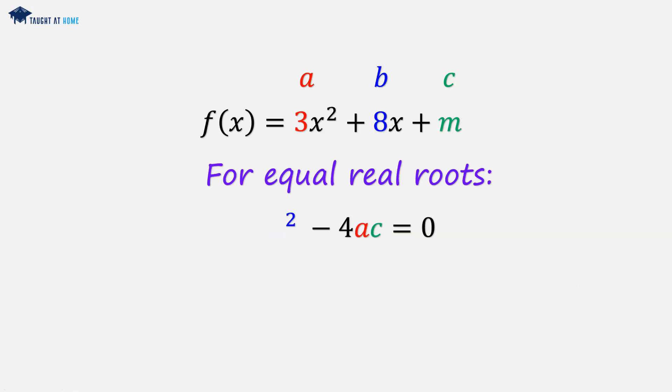We'll substitute our values for b, a, and c into the equation. We'll just tidy this up. So we have 12m is equal to 8 squared. 8 squared is 64.